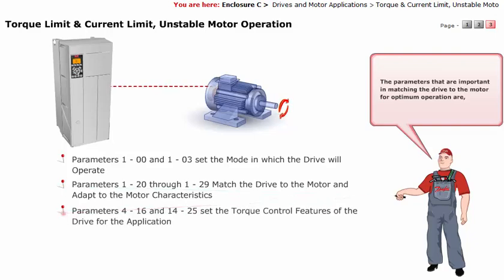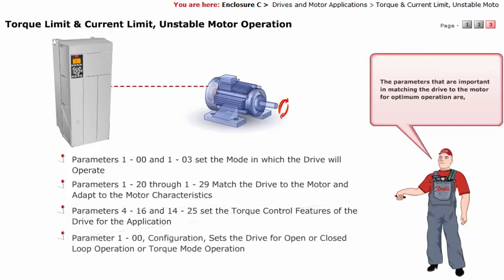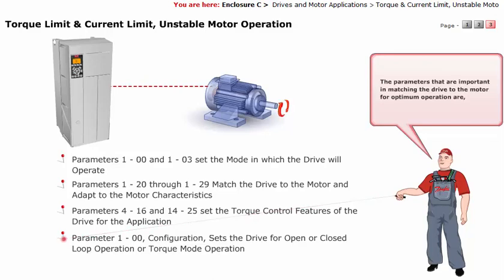Parameters 416 and 1425 set the torque control features of the drive for the application. Parameter 100, configuration, sets the drive for open or closed loop operation, or torque mode operation.